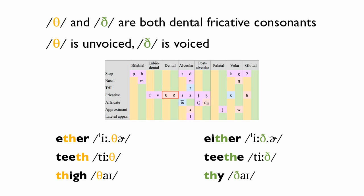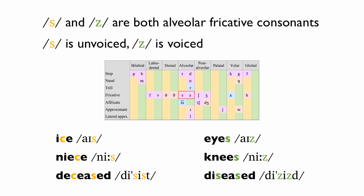Th and The are both dental fricative consonants. Th is unvoiced. The is voiced. S and Z are both alveolar fricative consonants. S is unvoiced. Z is voiced. Ice — Eyes. Niece — Knees. Deceased — Diseased.